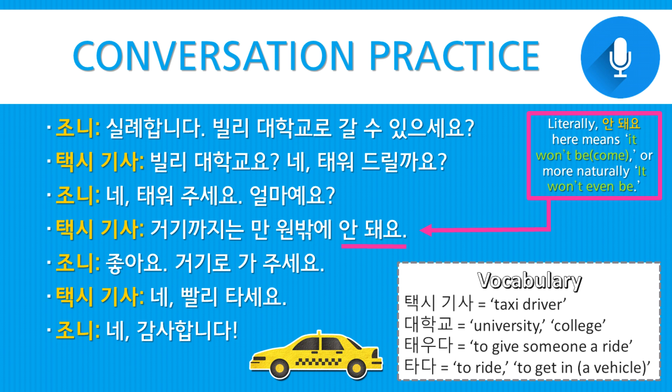얼마예요? — How much is it? The taxi driver says, 거기까지는 만 원 밖에 안 돼요 — Up to there is only 10,000 won. Here, 안 돼요 literally means 'it will not become,' but more naturally it's 'it won't even be.' So 만 원 밖에 안 돼요 means it won't even be 10,000 won. Johnny says, 좋아요. 거기로 가 주세요 — Good, please go there.